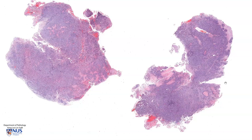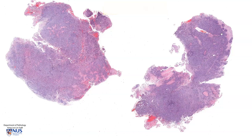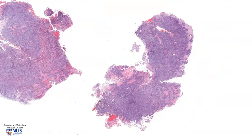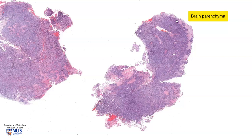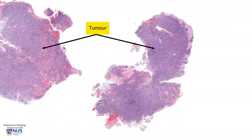Hello, this is a virtual microscopy slide of a tumour that has been excised from the brain. We have two pieces of tissue here. Over on the right side, we can see there's a little rim of pinkish appearing tissue, and this is some of the residual benign brain parenchyma. However, the majority of the tissue is composed of these sheets of very bluish appearing cells, and this is the tumour.